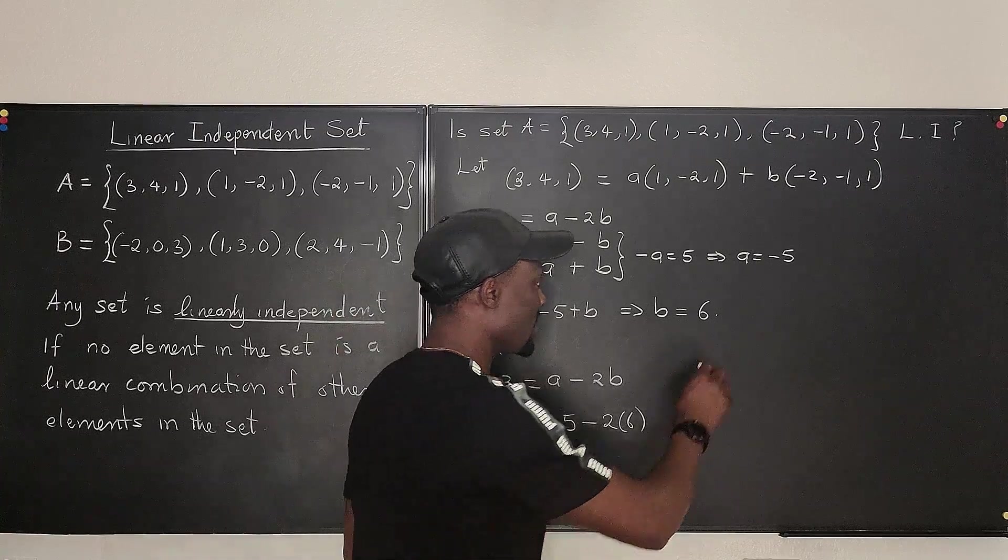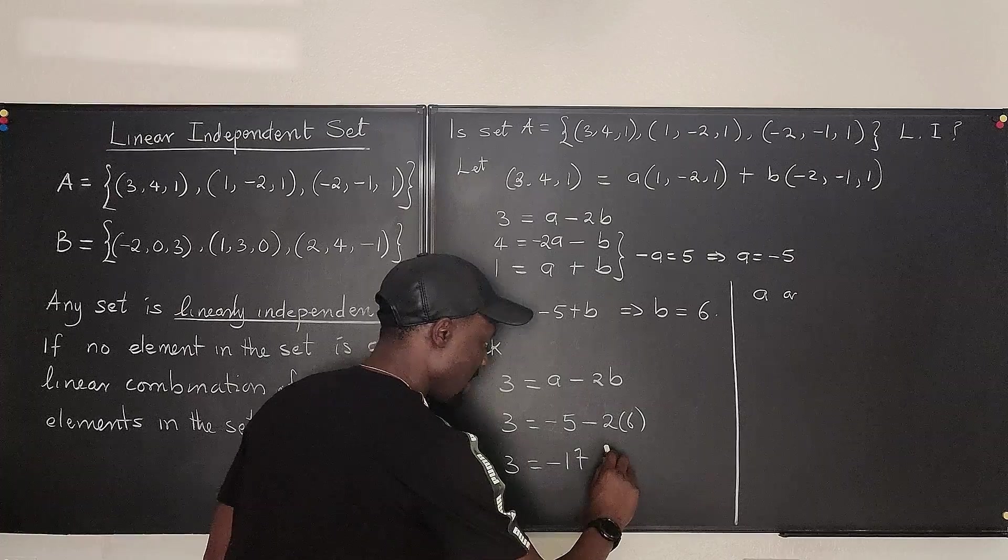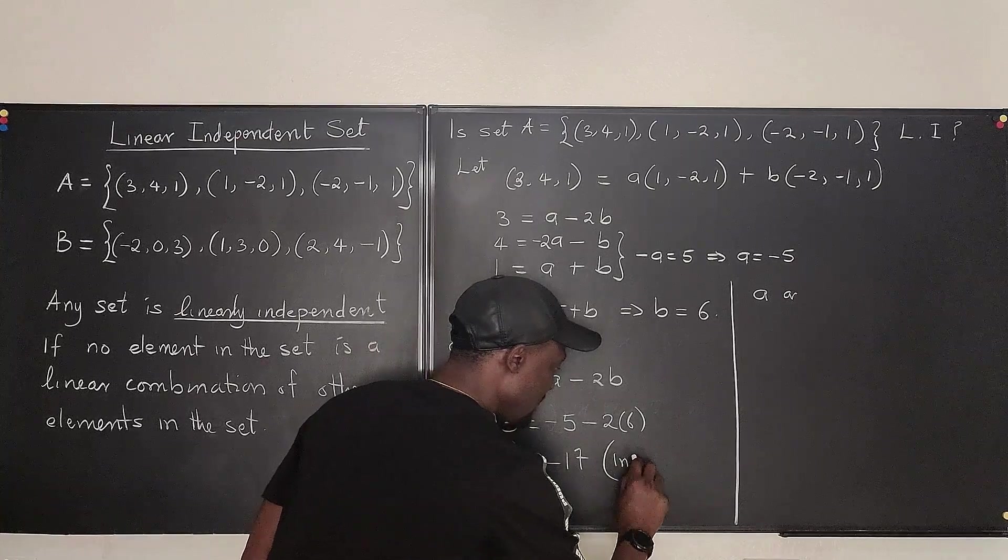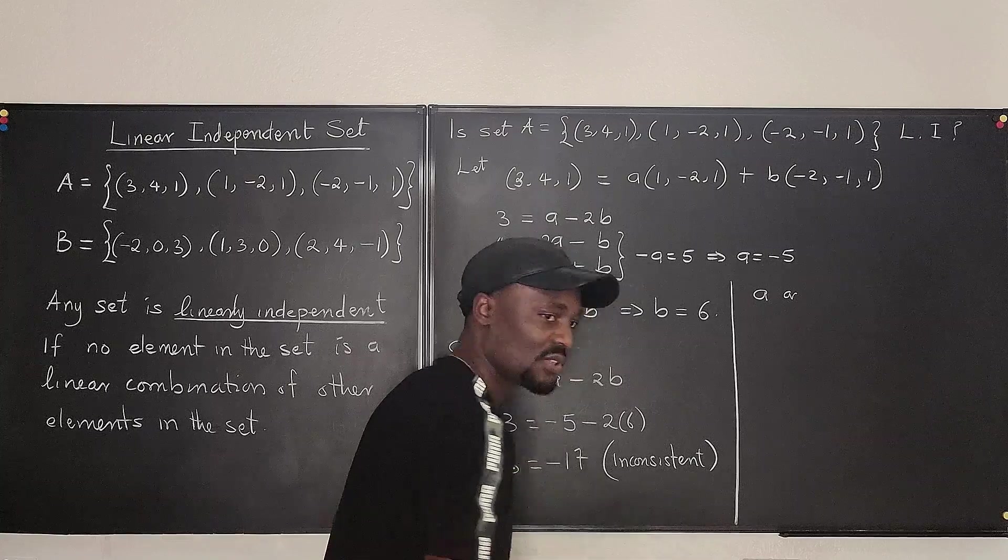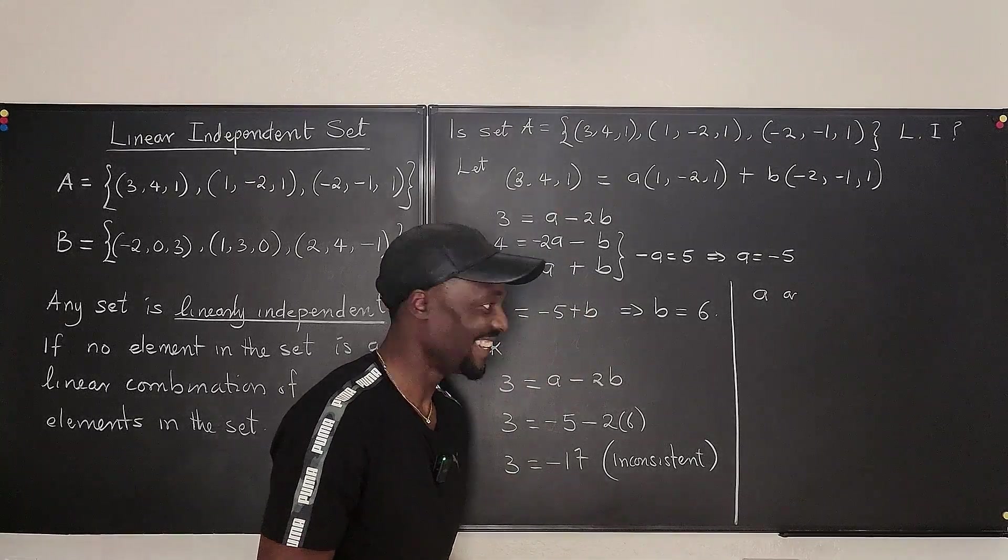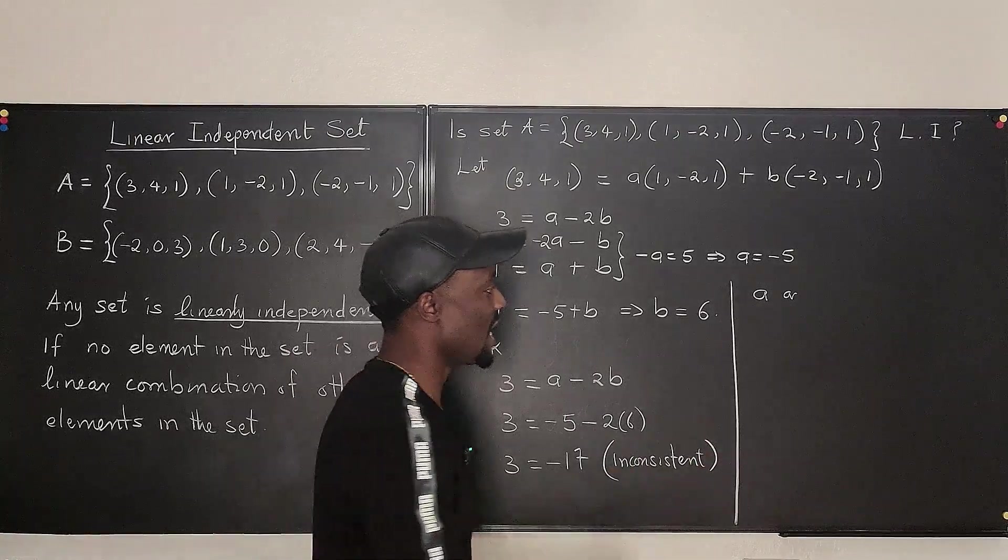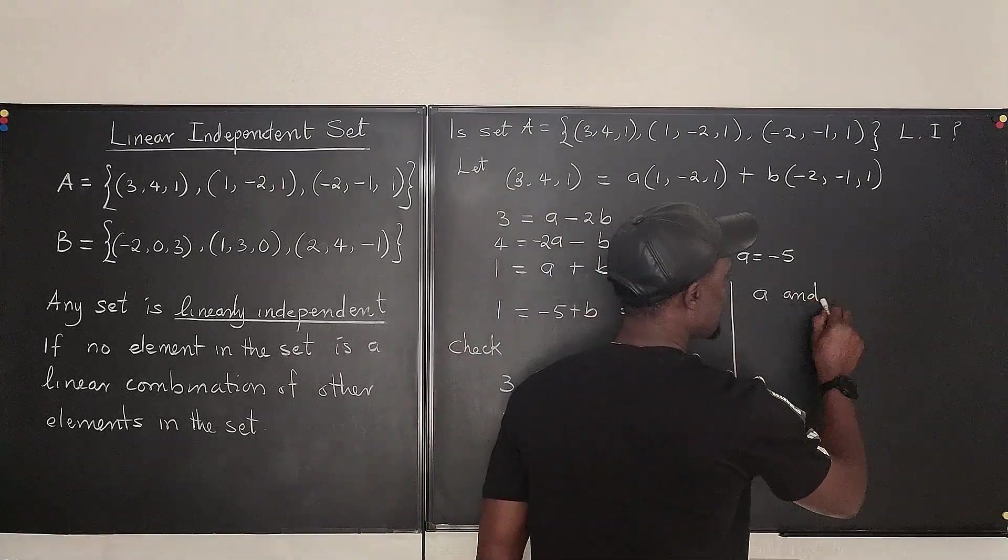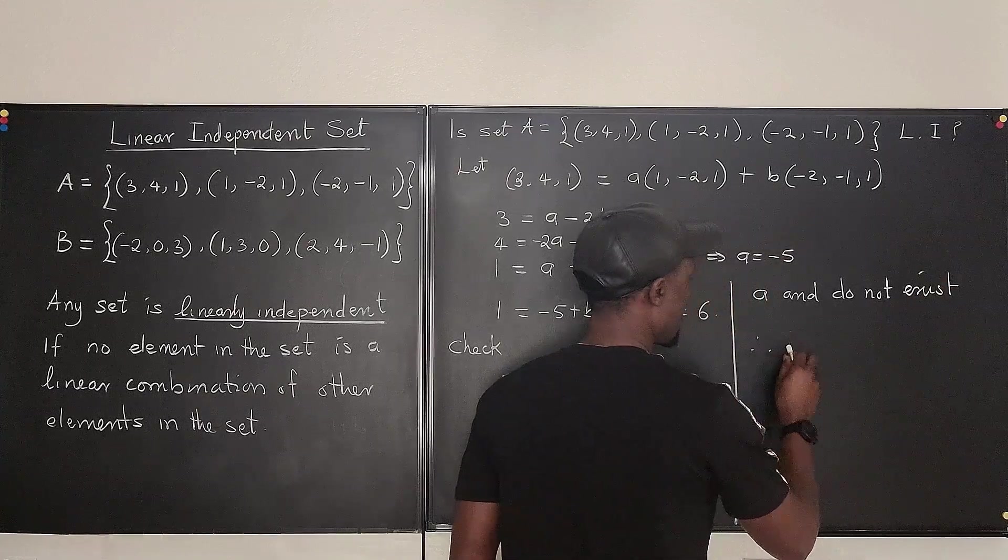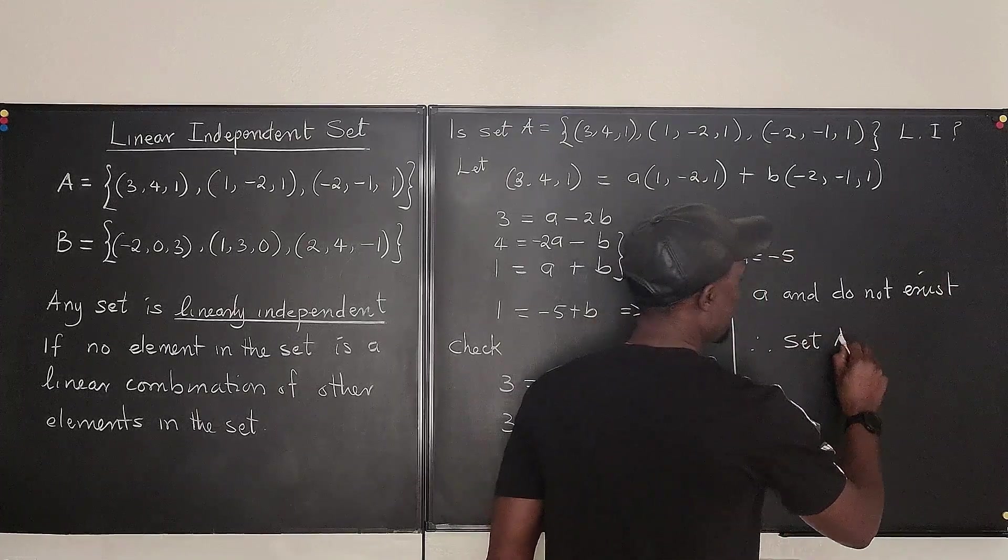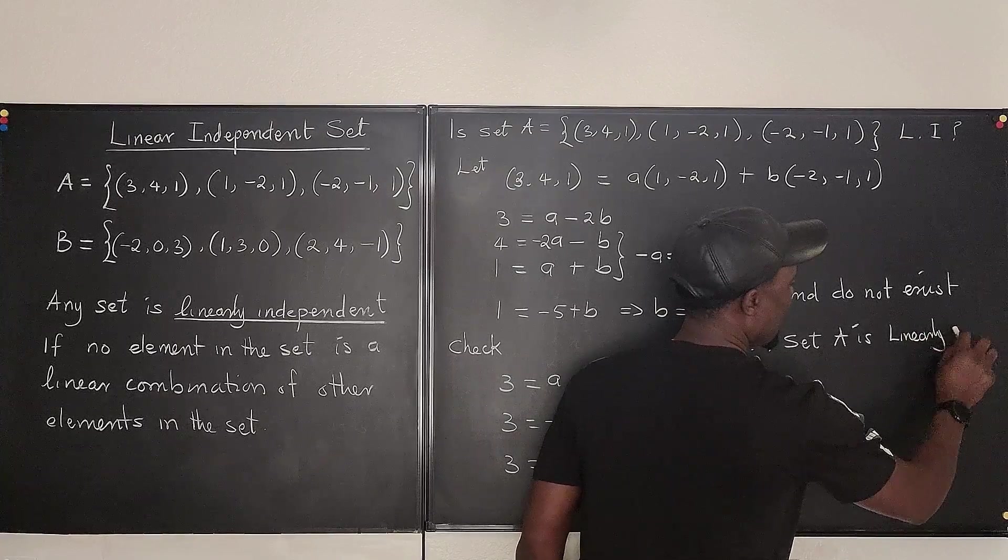Okay. So this is how you write your conclusion. A. Okay. Here you can write in front of it say inconsistent. Some people say impossible. Inconsistent. And because the two sides are inconsistent, you say A and B do not exist. Therefore, set A is linearly independent.